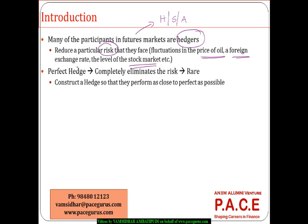If a hedger is able to eliminate risk completely, that is what we call a perfect hedge. Unfortunately, creating such a hedge is a very rare phenomenon. The challenge is, out of the various hedging opportunities available, how do we construct a hedge that comes as close as possible to eliminating risk — to what extent can it reduce risk? That is what comes as part of the perfect hedging mechanism.